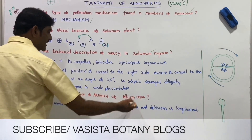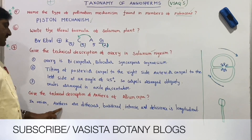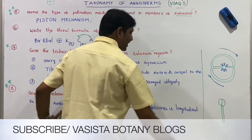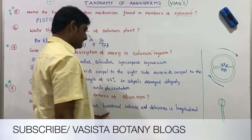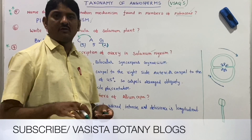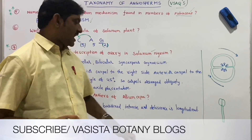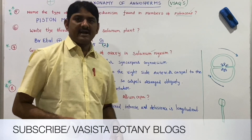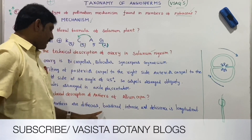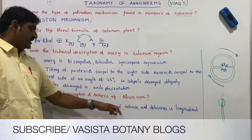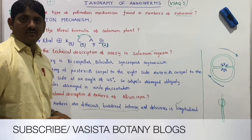Give the technical description of the anthers of Allium cepa. Allium cepa belongs to Liliaceae. The anthers of Allium cepa (onion) are dithecous, basifixed, and introrse — the anthers face towards the inside of the flower. Dehiscence is longitudinal dehiscence. So the key points are: anthers are dithecous, basifixed, introrse, and dehiscence is longitudinal. This is a two-mark question.